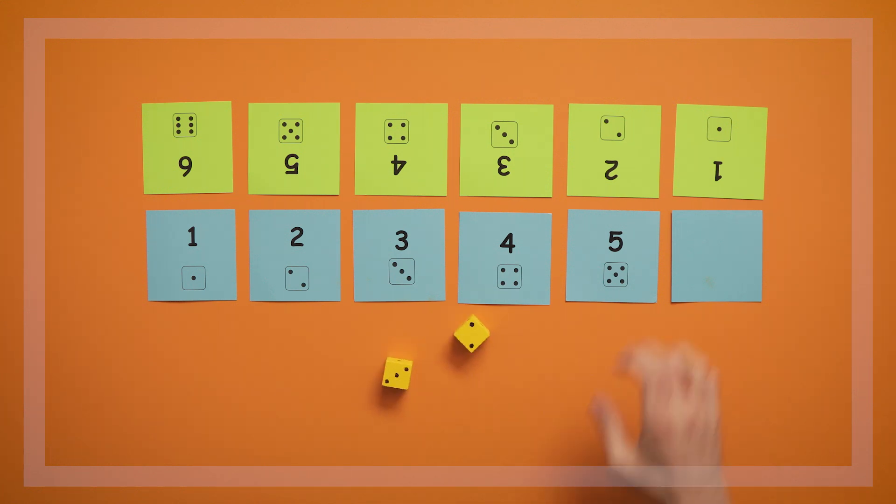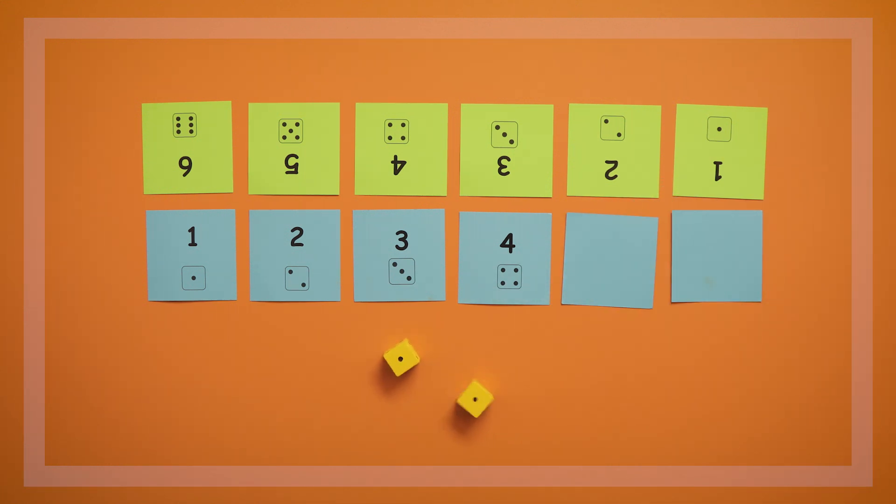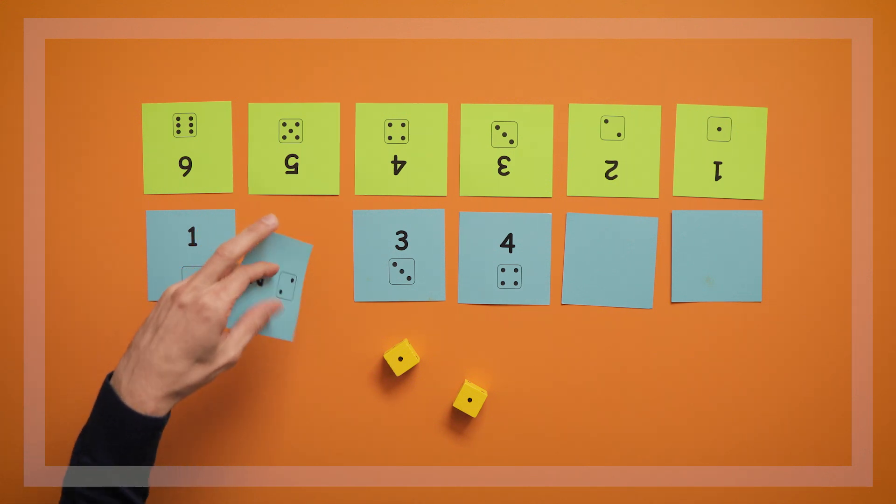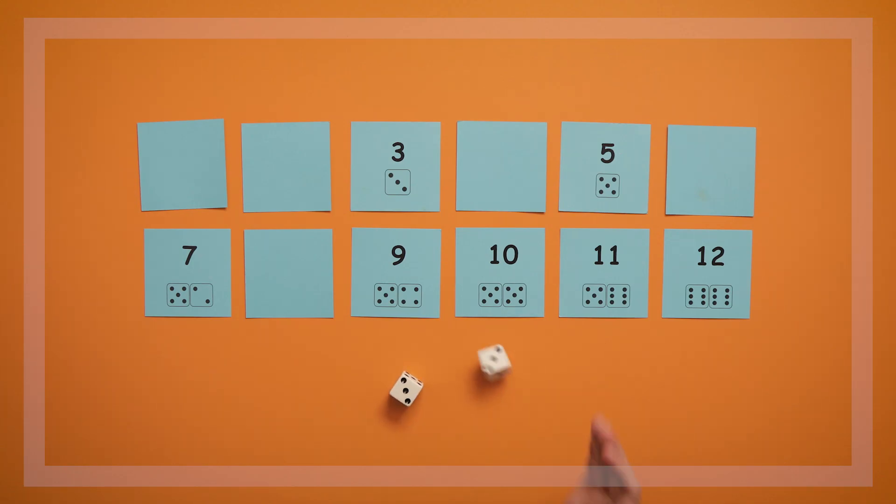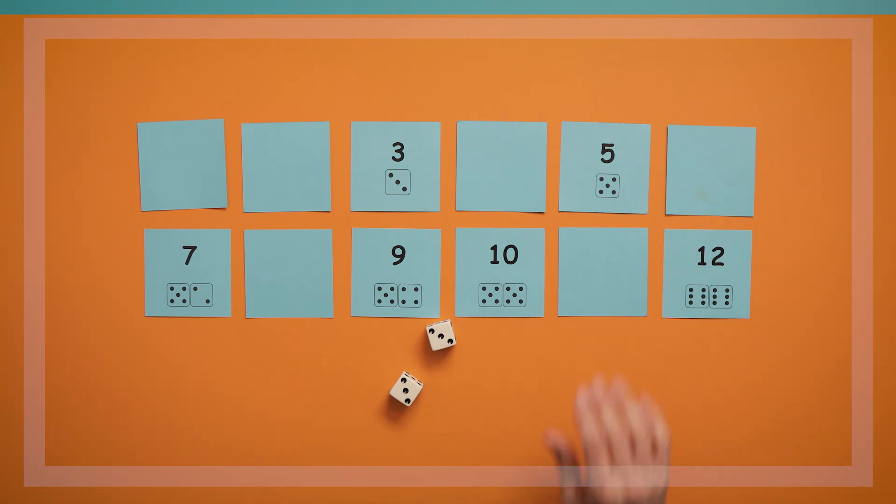Children can eventually move on to play the next level of this game, called Roll 2 1 to 6, where two dice are used with the 1 through 6 cards. In the last version of this game, called Roll 2 1 to 12, two regular dice are used with the 1 through 12 cards.